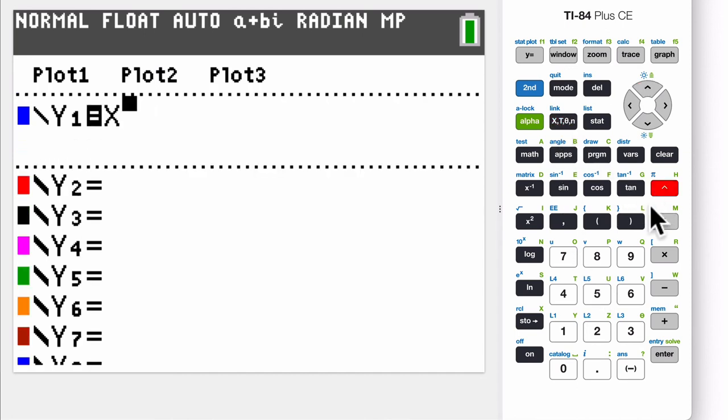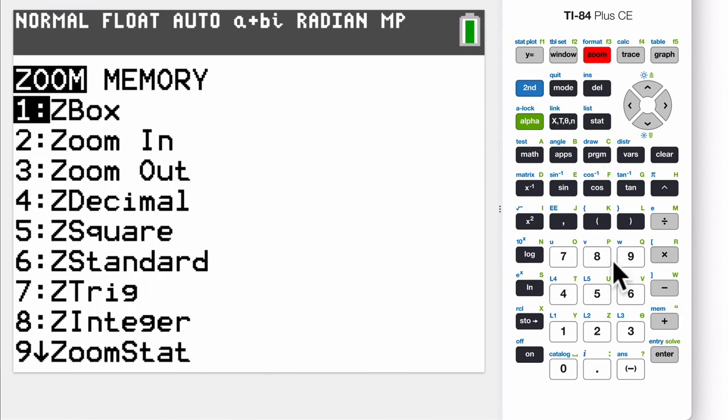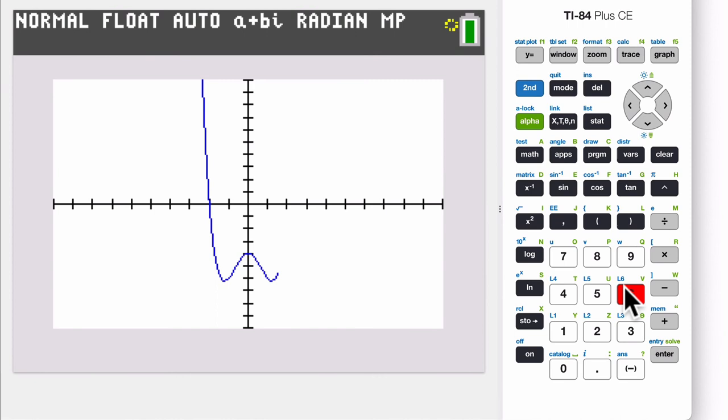So we have x to the fourth, and then I already forgot what I was doing. Minus three x squared minus four. In the graphing calculator, I just pressed zoom six to give me a standard zoom.